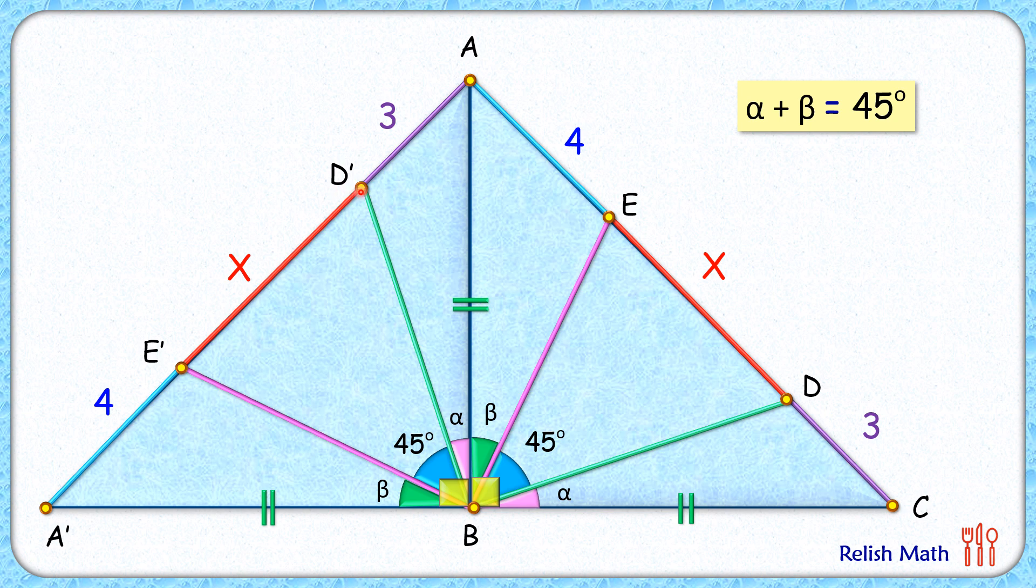Let's join this point D dash and E. Now here this angle, because this is an isosceles right angle triangle, so this angle will be 45 degrees, also this angle will be 45 degrees.